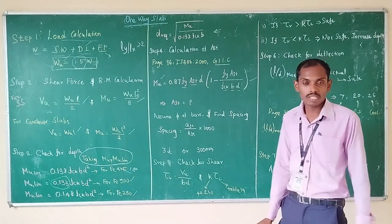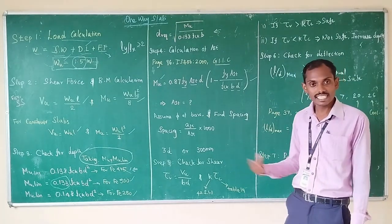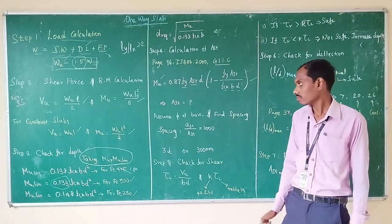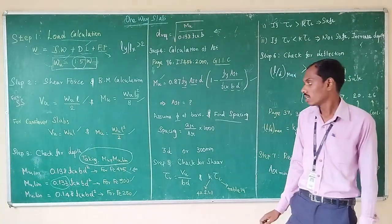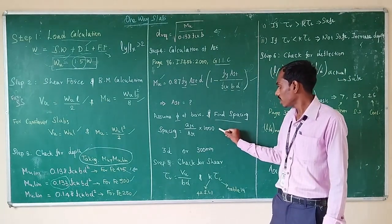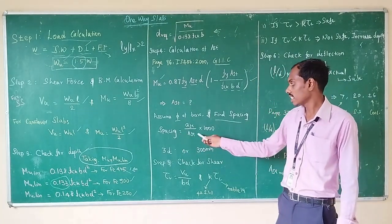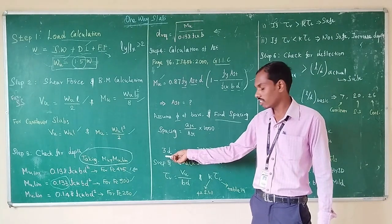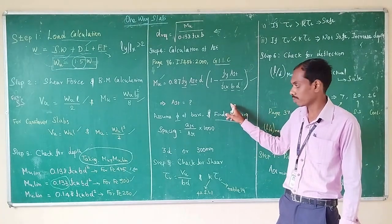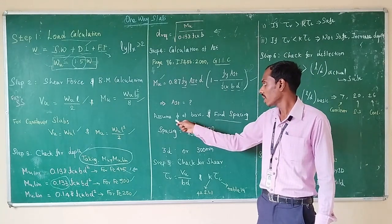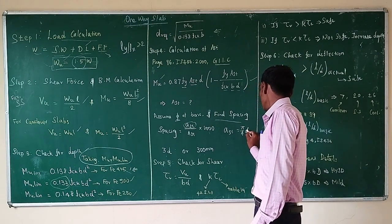Next, assume the diameter of the bar. For a slab, in no case shall the diameter of the bar exceed 1/8 of the overall depth of the slab. The spacing of main reinforcement is the least of: (i) (ast / AST) × 1000, (ii) 3 times the effective depth, and (iii) 300 mm. Here, ast (small) is the area of one bar = (π/4) × d², where d is the diameter of the bar.